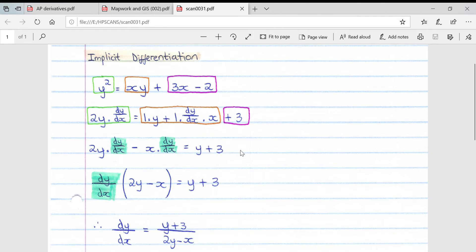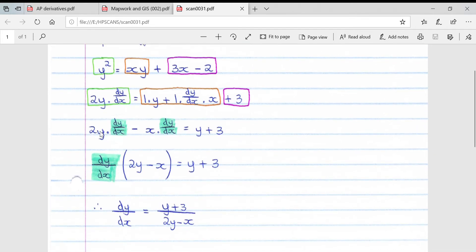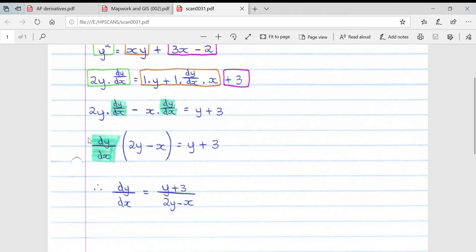Then we can see these two terms on the left of the equal sign have a common dy over dx, so we pull that common dy over dx out. We're left with 2y minus x equals y plus 3.